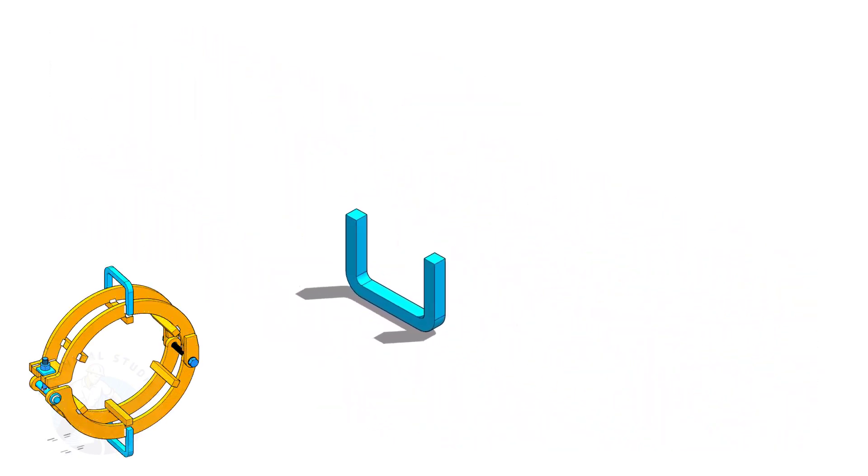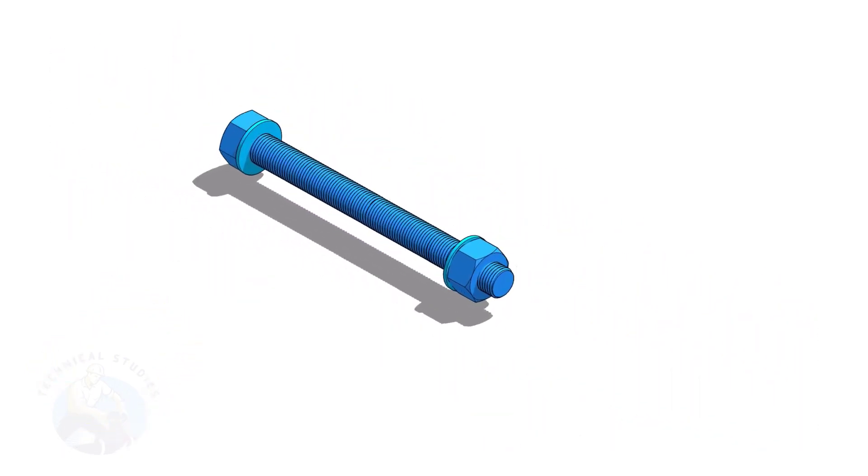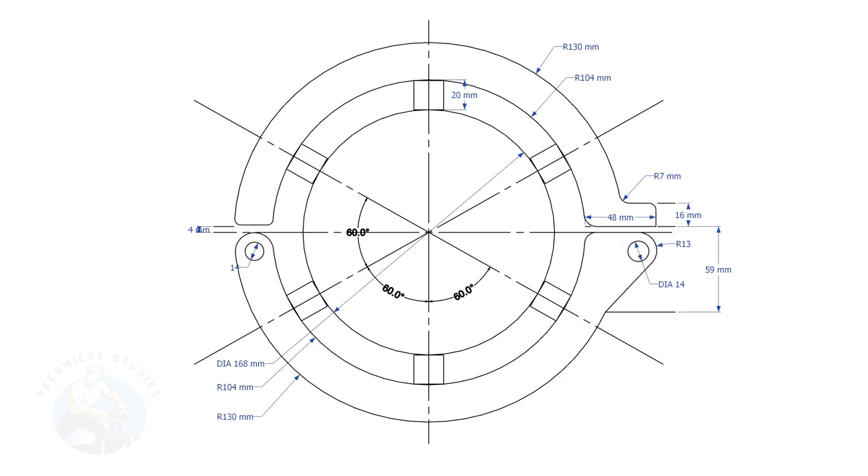Let us make the different parts of the pipe clamp. This is the main part of the clamp. I will explain to you how to layout this. There are two parts for the main body, the upper half and the lower half. Each part of the body, there are two pieces.